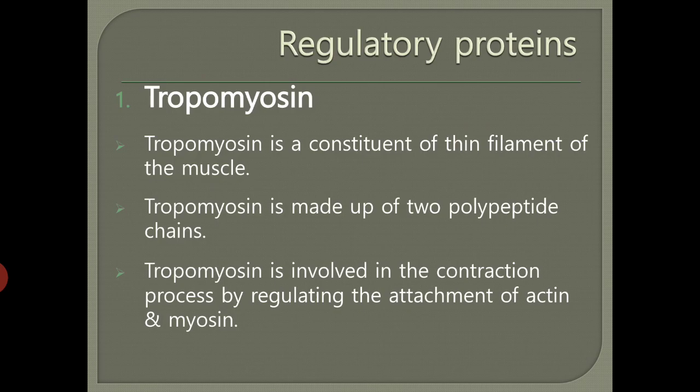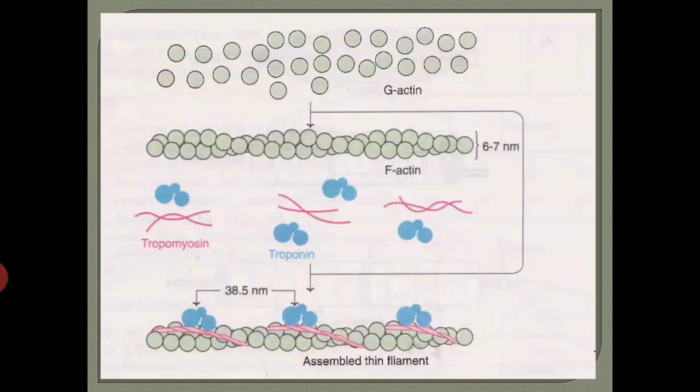Coming to the regulatory proteins: tropomyosin and troponin. Tropomyosin is a constituent of the thin filament of the muscle fiber. It is made up of two polypeptide chains and is involved in the contraction process by regulating the attachment of actin and myosin — that is how it regulates contraction.